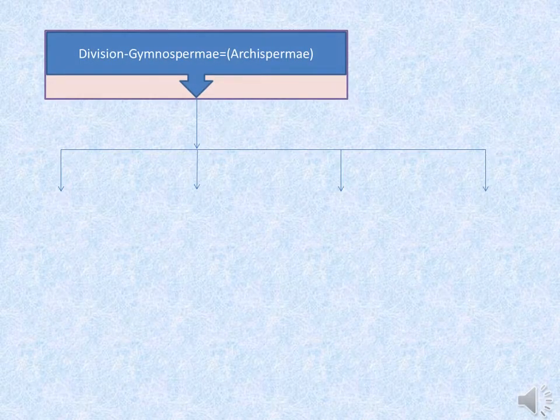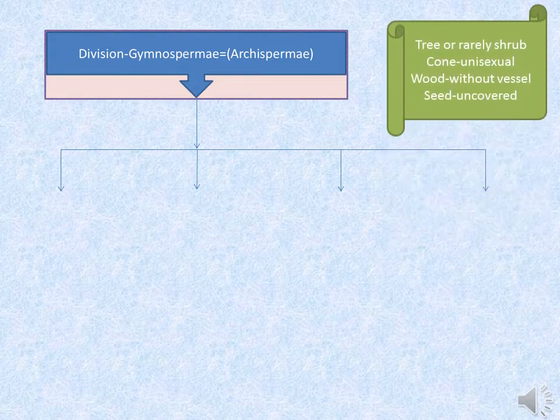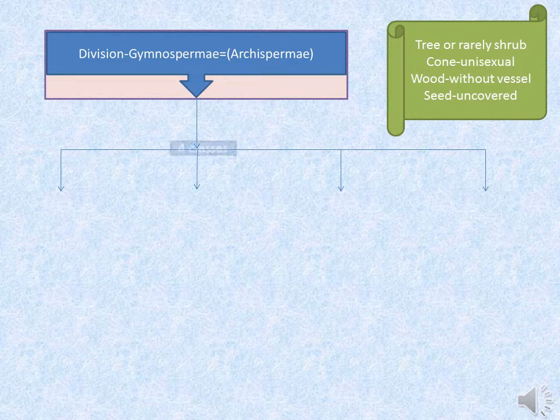Division Gymnospermia includes trees or rarely shrub species. The cone is unisexual, seeds are uncovered, and wood is without vessels.